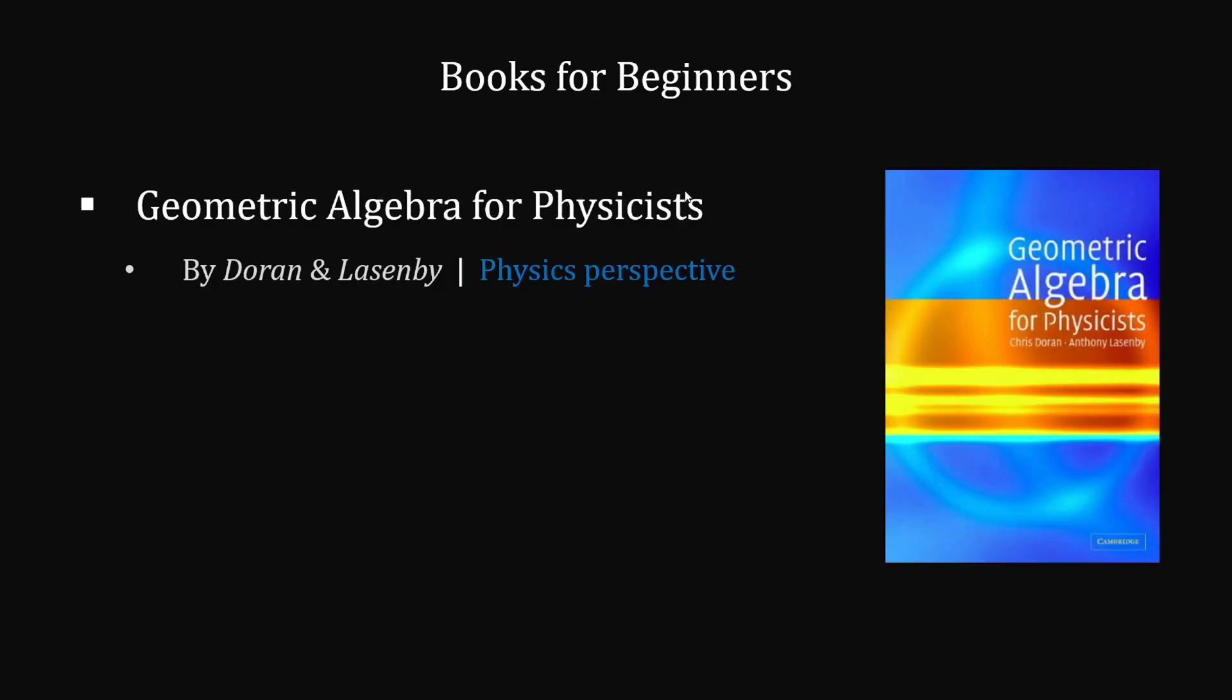Geometric Algebra for Physicists by Dorne and Lassenby is by far my favorite textbook on geometric algebra. While it assumes a physics background, the writing, logical flow, and visual formatting are all extremely well done. There's a reason I based my first YouTube lecture series off this book. It's essentially the bible of geometric algebra applications within undergraduate and entry graduate level physics.